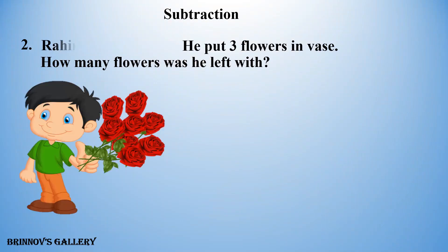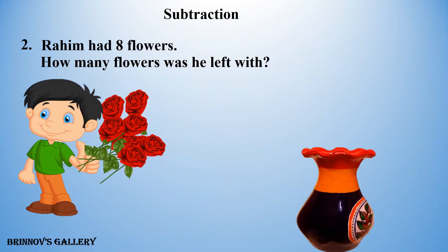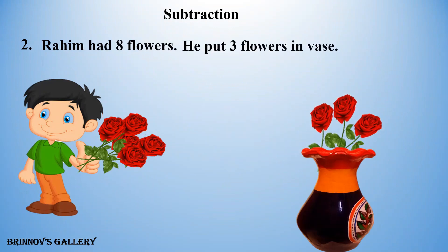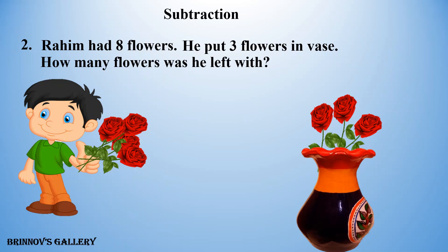Rahim had 8 flowers. He put 3 flowers in a vase. How many flowers was he left with? One, two, three, four, five. Five flowers.